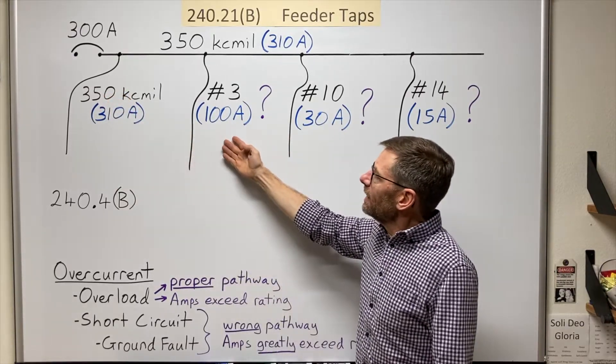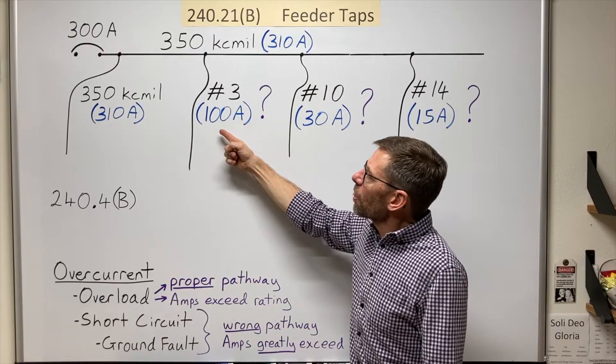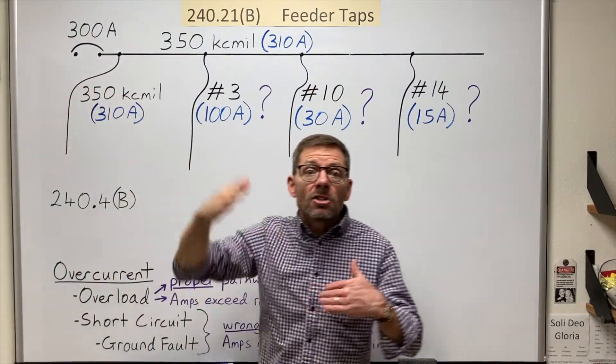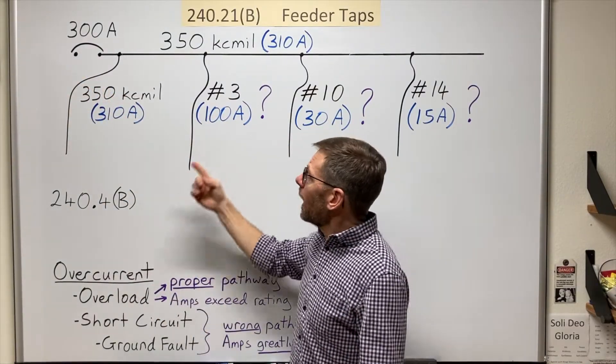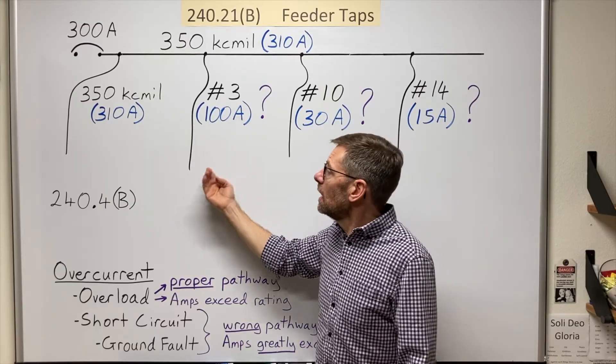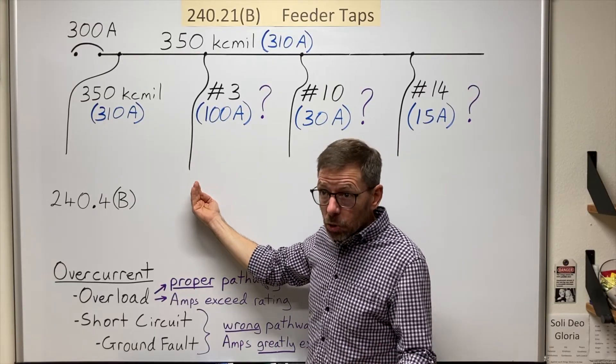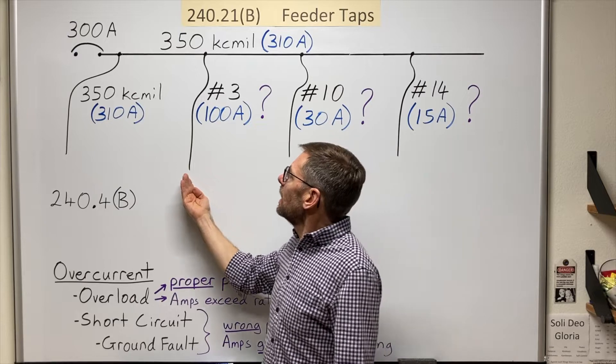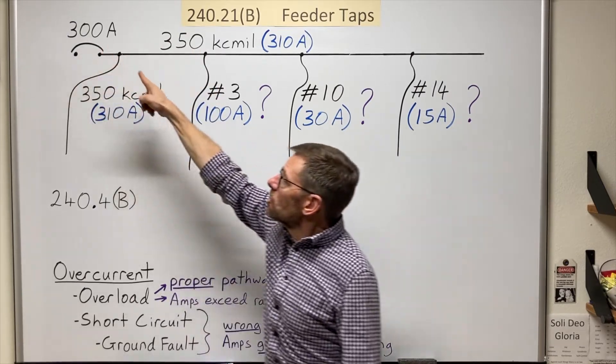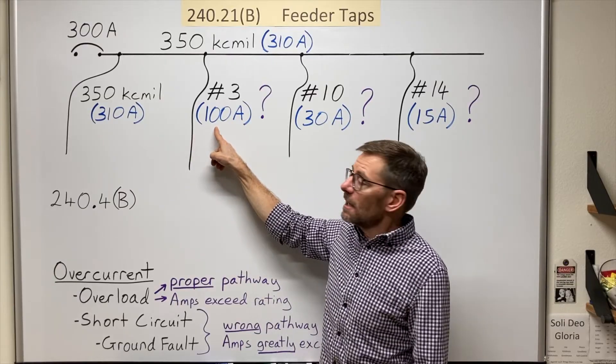But when I get here, you could get three times the ampacity of a number three before this breaker even starts thinking of opening. And that's exactly what the definition of a tap conductor is. In 240.2, it says any conductor where the breaker ahead of it is too big for the ampacity of the wire.